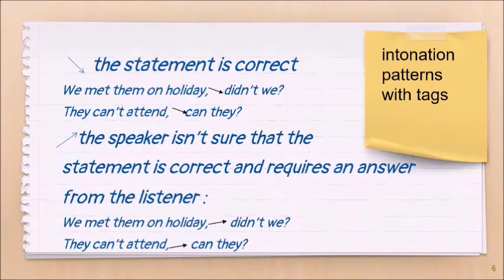Secondly, an intonation pattern with tags. They show speakers' attitude to their questions. Usually a positive statement is followed by a negative tag and a negative statement is followed by a positive tag. The falling intonation on the question tags gives the impression that a statement is correct. The rising intonation on the tag indicates a genuine question. The speaker isn't sure that the statement is correct and requires the answer from the listener.